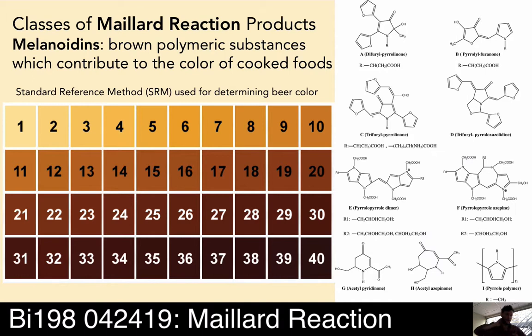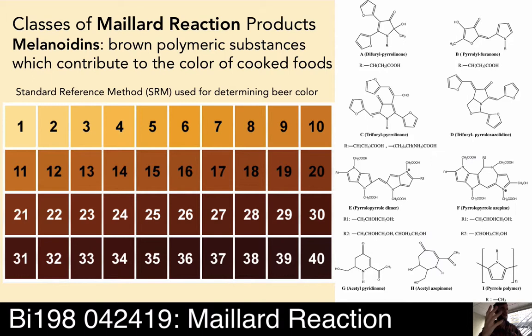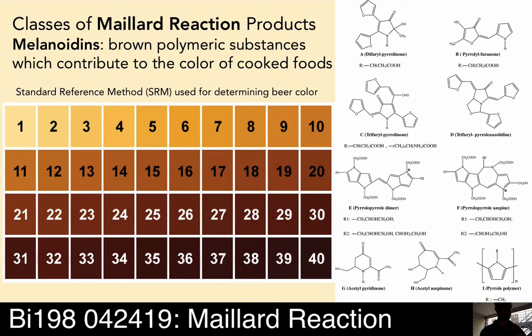Color comes from compounds called the melanoidins — polymeric structures which contribute to the flavor of cooked foods. This is the standard reference method for determining the color of beer. Any of these colors are going to be produced by a range of different melanoidins that might be present during the malting process in beer. Obviously a lot of breweries are taking advantage of this.